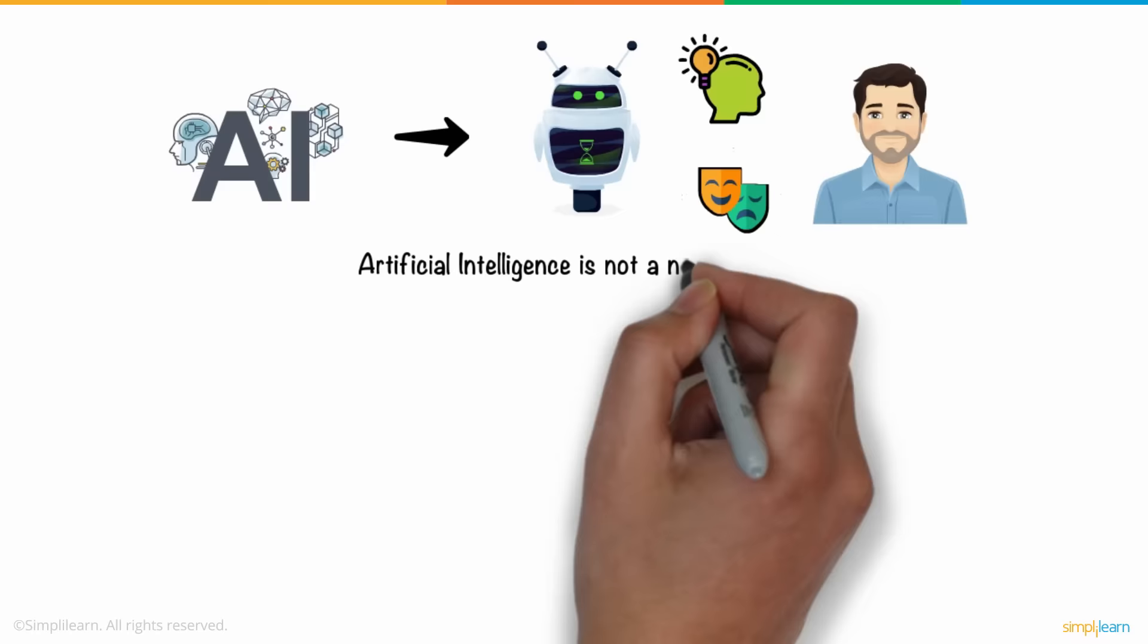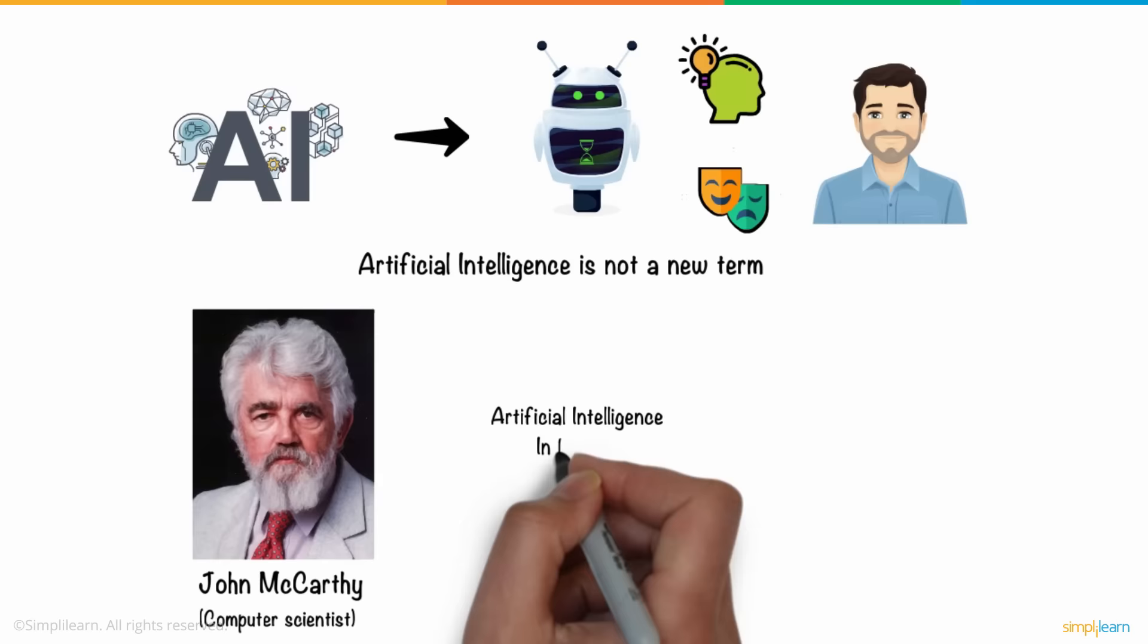Artificial intelligence is not a new term. John McCarthy, a computer scientist, coined the term artificial intelligence back in 1956, but it took time to evolve as it demanded heavy computing power.